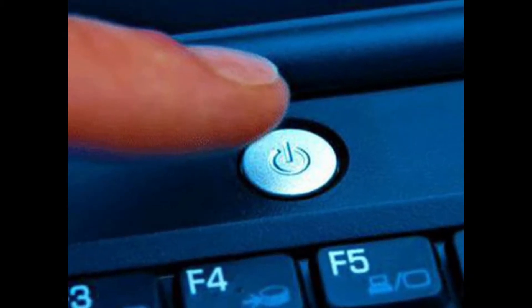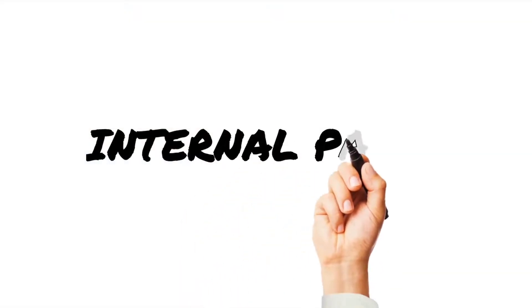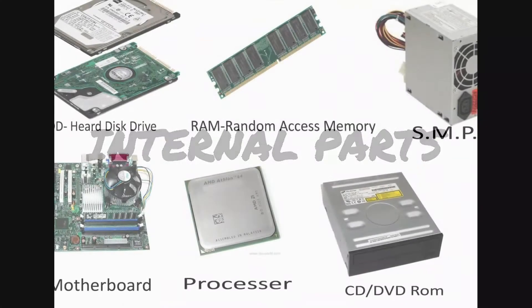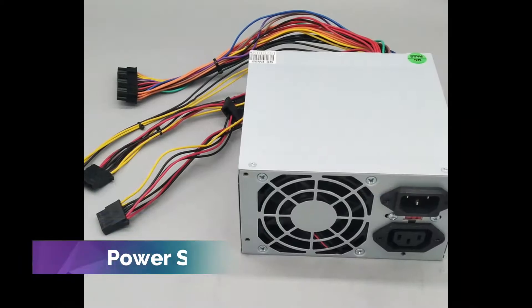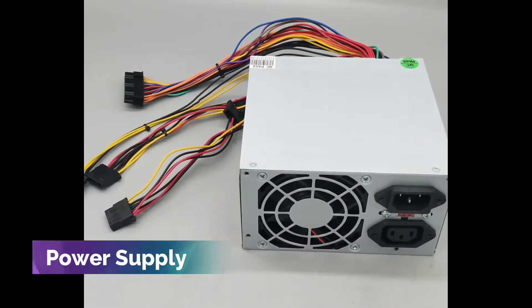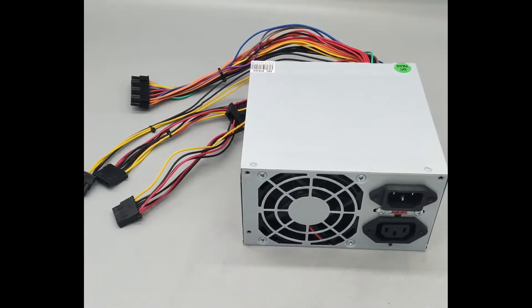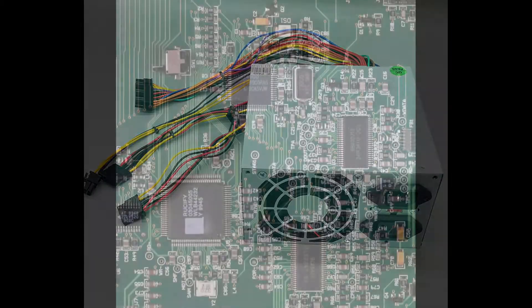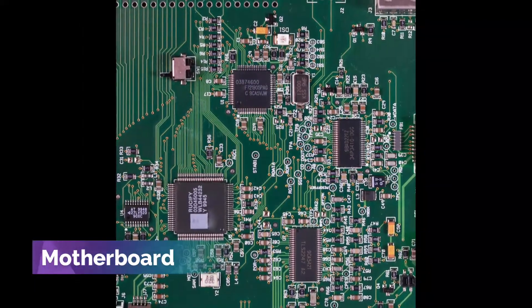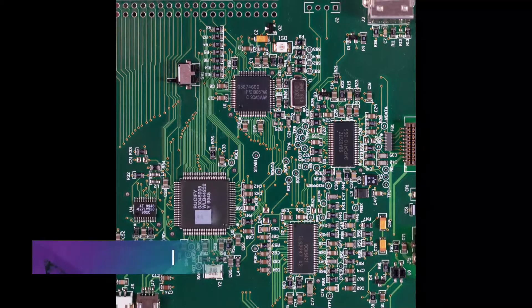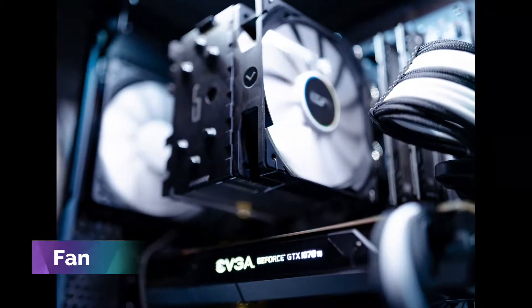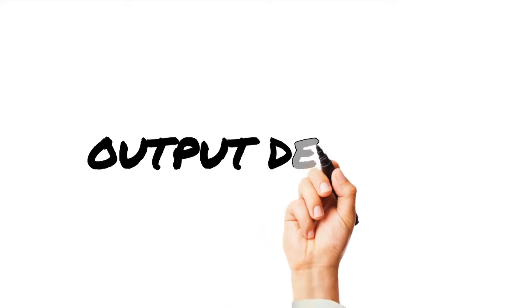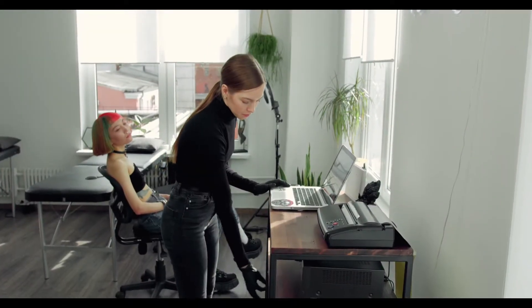Internal parts are located inside the system unit. The power supply supplies electrical power that enables all internal parts to work, as well as the system unit. The motherboard is where the cards, processor, and memory chips are placed. The fan keeps the parts inside the system unit cool while processing data.